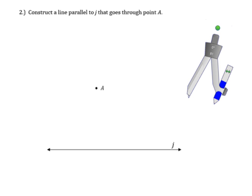To construct a line that's parallel to J and goes through point A, you first have to draw a transversal.